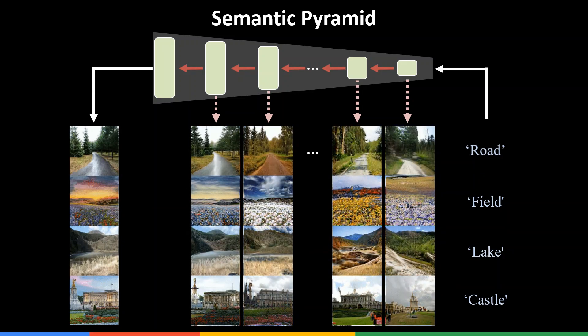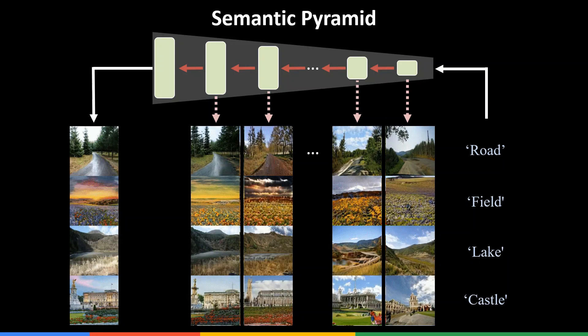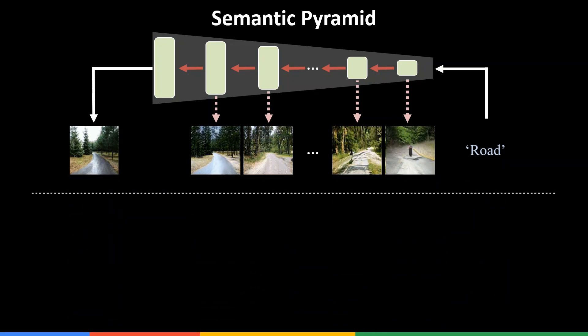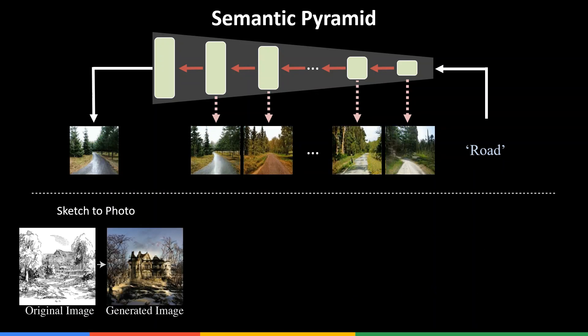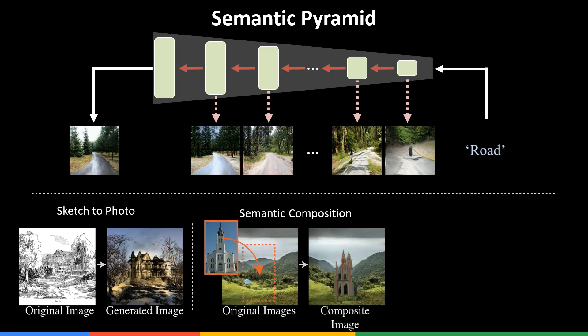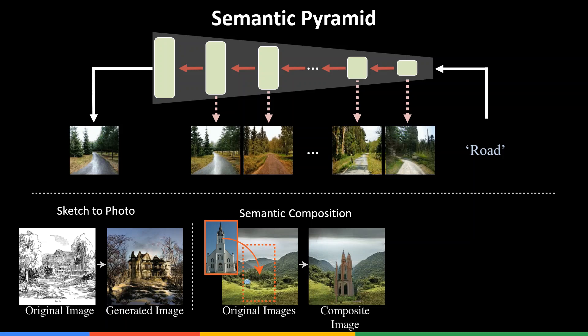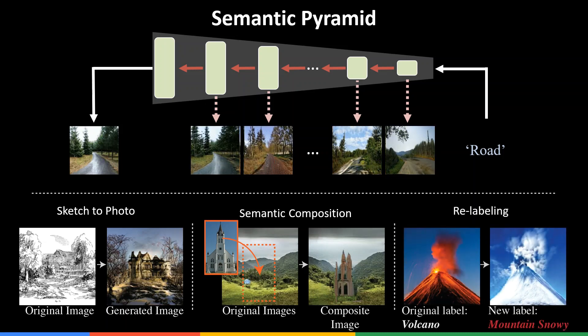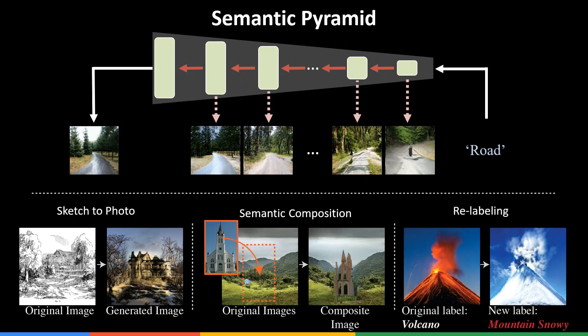This ability allows manipulating images through their semantics and gives rise to various applications, such as translation for various domains to natural images, for example sketch to photo, or semantic image composition, editing objects into scenes. Also, relabeling from one class to another, and more.